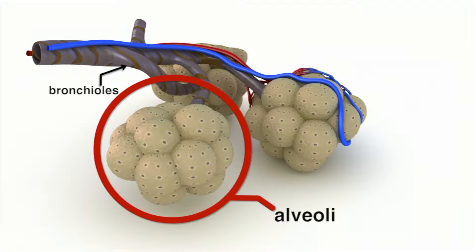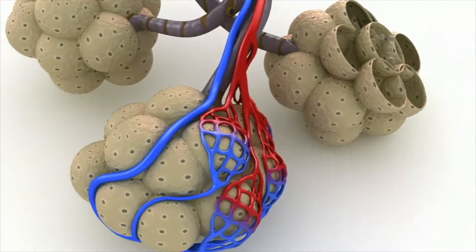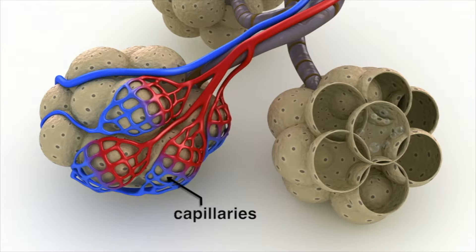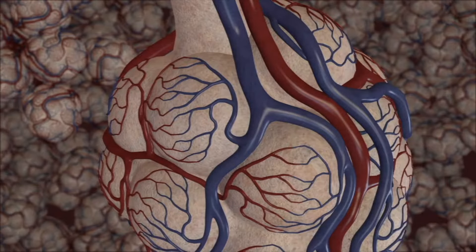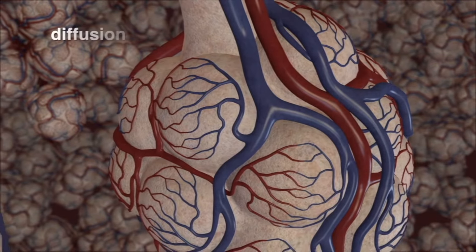The 300 million alveoli make gas exchange efficient. Each alveolus is enveloped by a web of capillaries that receives blood from the circulatory system. Alveoli provide a huge surface area for diffusion of gases.